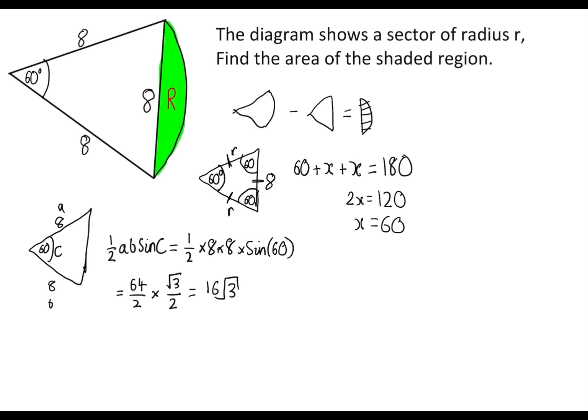So now we have the area of this triangle, we're also going to find the area of the sector. So the area of the sector, here it is, let's just draw it out. So to find the area of the sector, let's think of this as a whole circle first. So if it was a whole circle, to find the area we do pi times the radius squared, which is 8 squared.